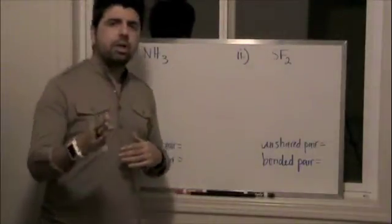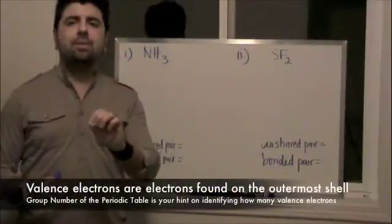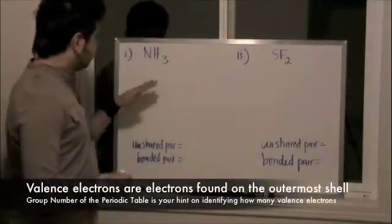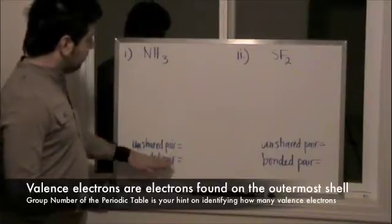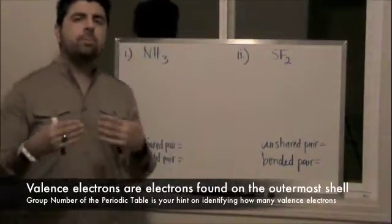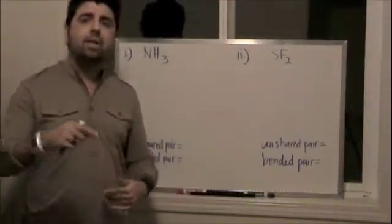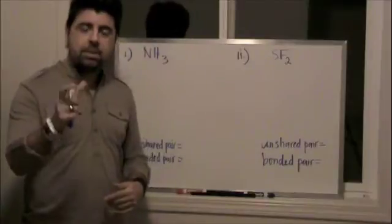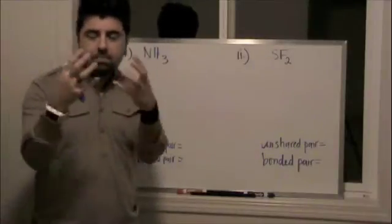And what we're going to do is we're going to draw electron dot diagrams and we're going to identify the number of regions of high-density electrons. So let's look at our first example. And if you notice here at the bottom of each one, these are two bits of information that is very important for us to be able to identify to help us figure out what shape does our molecule make up.